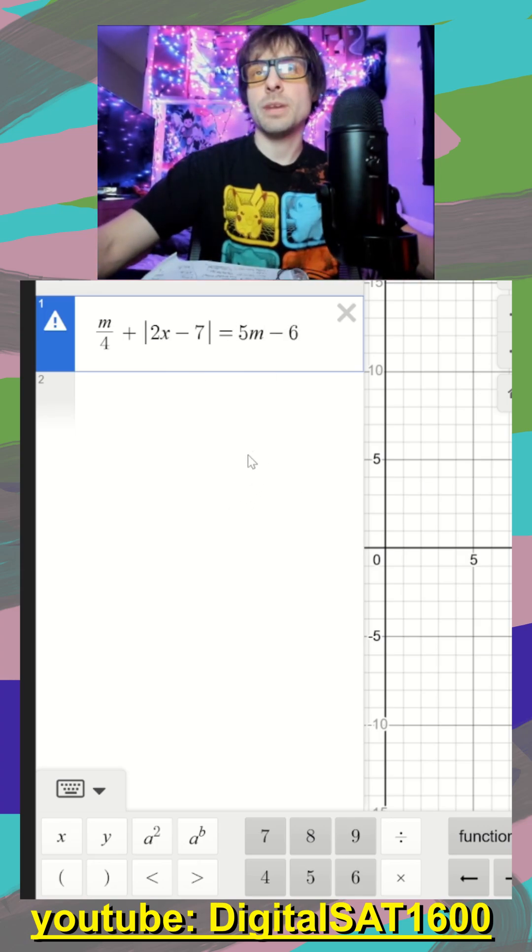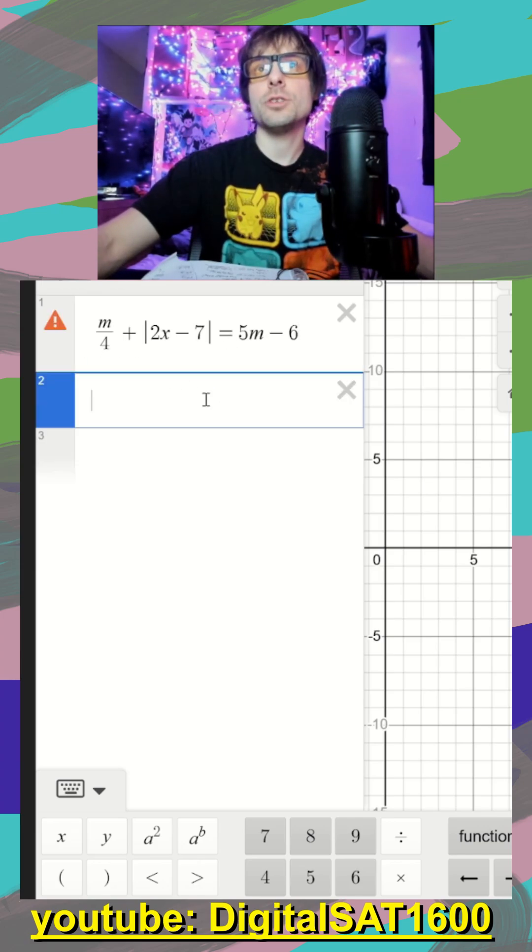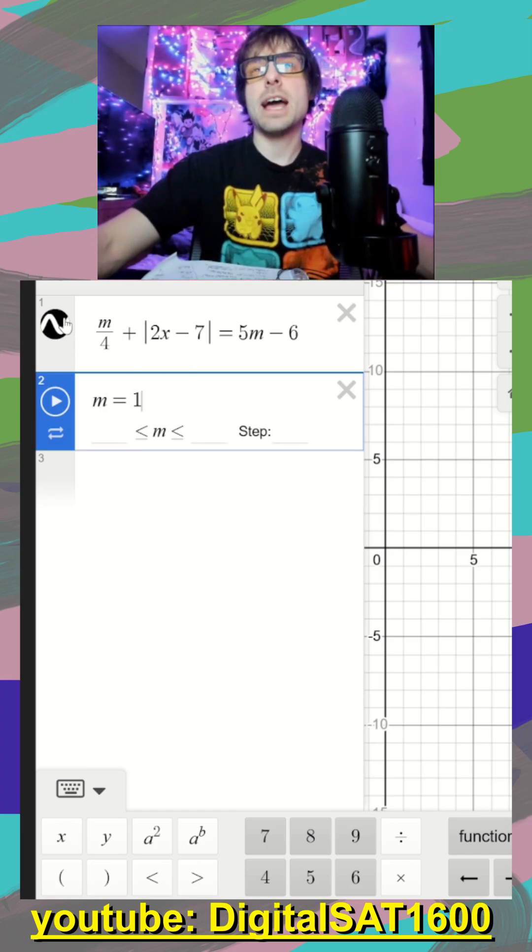So two things I like to change in my functions on Desmos. Number one, if it ever doesn't ask you for a slider and you have a letter in there, you just make your own down below. You just say m is equal to one, that fixes my graph.